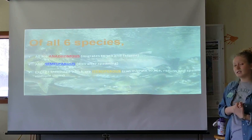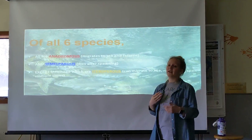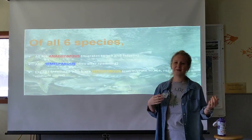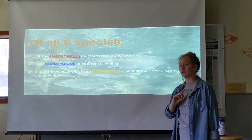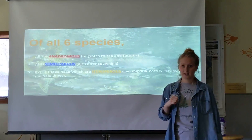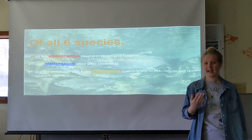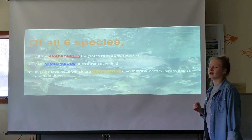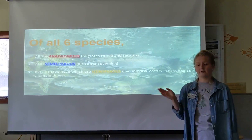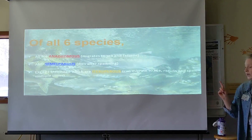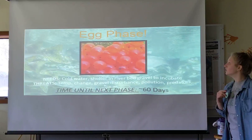Of all six Pacific Northwest species we've talked about, all of them are anadromous — meaning they all migrate to the sea and return, heading out through the estuary and making their way back to the river. They are all also semelparous, which means they die after spawning — except the steelhead, who is iteroparous, meaning they can migrate to sea, return to the river and spawn, and repeat that life cycle multiple times before dying.